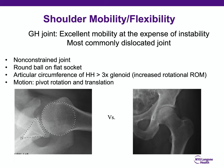We all know that the glenohumeral joint has excellent mobility, but this comes at the expense of instability. The shoulder is the most commonly dislocated joint in the body. It is a non-constrained joint with a configuration of a round ball on a flat socket, compared to a classic ball-and-socket joint like the hip. The articular circumference of the humeral head is more than three times that of the glenoid, providing increased rotational range of motion. Motion in the shoulder is not purely pivot rotation but also involves translation, especially at the extremes, providing additional end-range of motion.